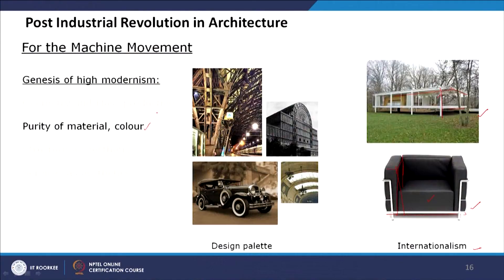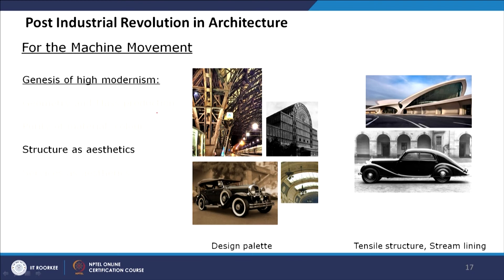In Bauhaus, pure colour is also a key visual style. In structure as aesthetics, the structure is exposed as an aesthetic element. As construction technique evolved, they had the option to curve the structure into different aesthetic forms, but the structure itself created the form without additional facade treatment. This structural member takes the building's load and creates the TWA Terminal's form, which looks like a bird about to take off.